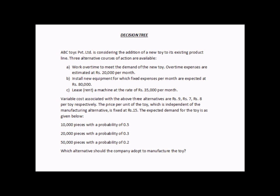While making the decision of adding a new toy to the product line, they have three alternate courses of action. Option A is to work overtime — overtime expenses are estimated at rupees twenty thousand per month. Option B is to install new equipment — fixed expenses are expected at rupees eighty thousand per month. Option C is to lease or rent a machine at rupees thirty five thousand per month. All three costs are fixed costs.